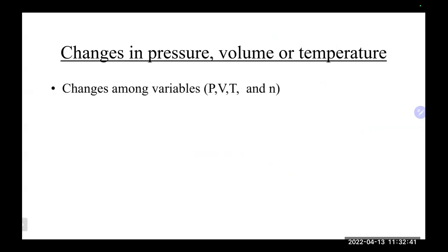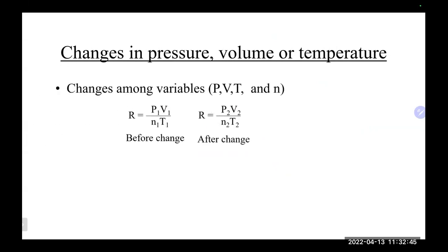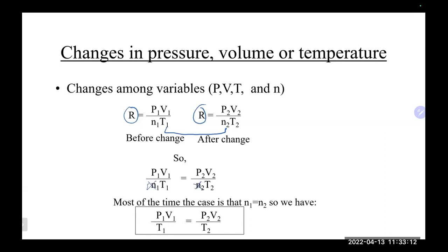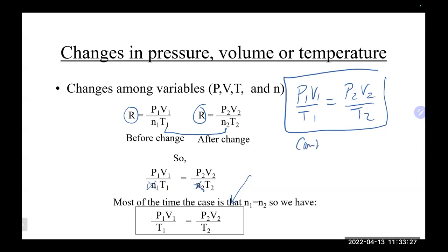There is a gas law that deals with all three variables together — the Combined Gas Law — derived from the ideal gas law by solving for R in each state and setting them equal. Since the moles stay constant when a container is closed, we get: P1V1/T1 = P2V2/T2. Pressure and volume can be in any units as long as they're the same on both sides, and temperature must be in Kelvin.